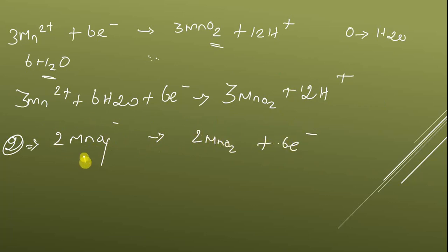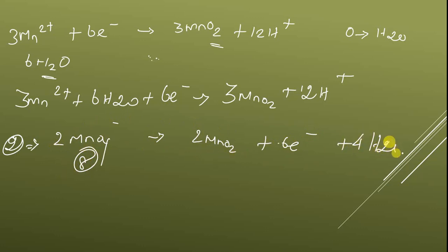The reduction half equation is written as: 2MnO4- → 2MnO2 + 6e-. There are 4×2 = 8 oxygen atoms on the left and only 4 on the right, so I am adding 4 water molecules. That gives 8 hydrogen atoms, so I am adding 8 H+ ions to balance.